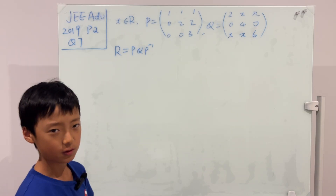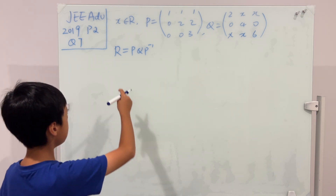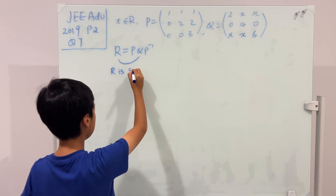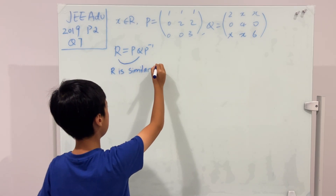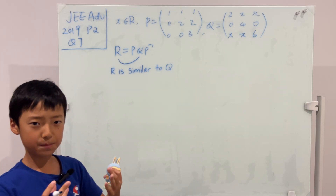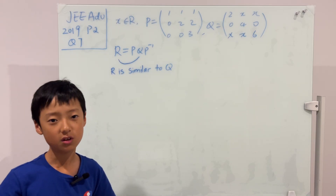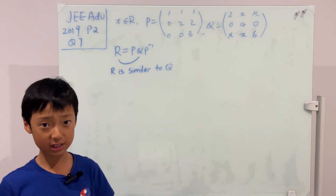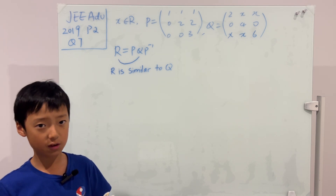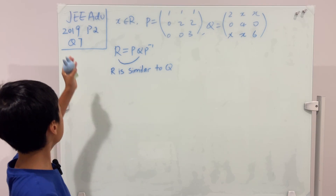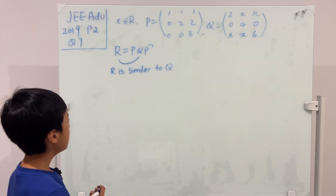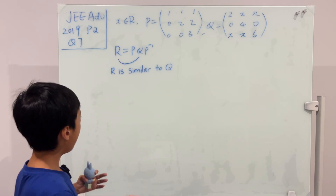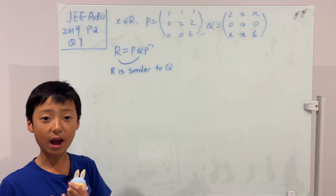So how do we solve this question? The first thing to notice is that we see this relation, which means that R is similar to Q. And if you don't know any of these concepts or terminology, I would highly recommend the book I also mentioned in the last video: Introduction to Linear Algebra, 5th Edition by Gilbert Strang. I highly recommend it to master JEE Advanced linear algebra questions. Now, what's the point of saying R is similar to Q? If R is similar to Q, then R and Q have the same eigenvalue and the same determinant.